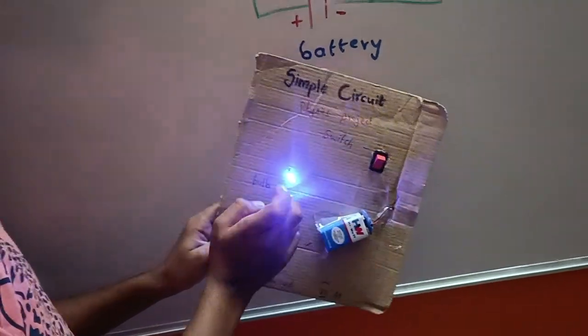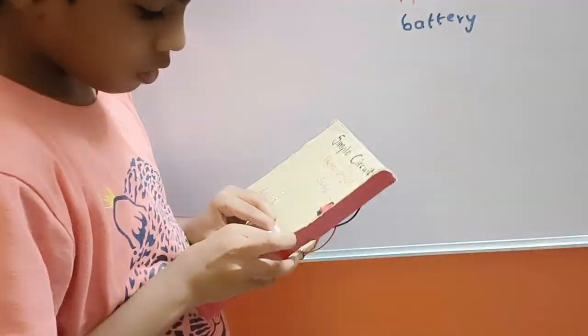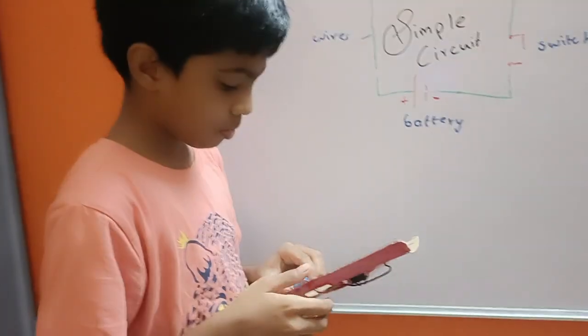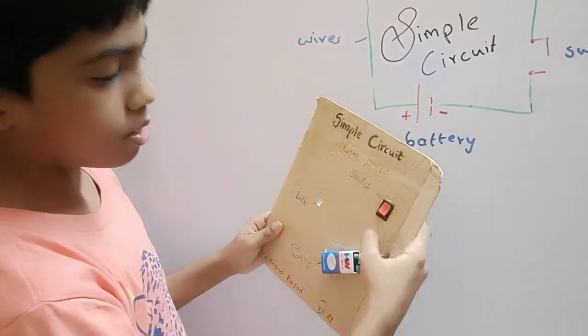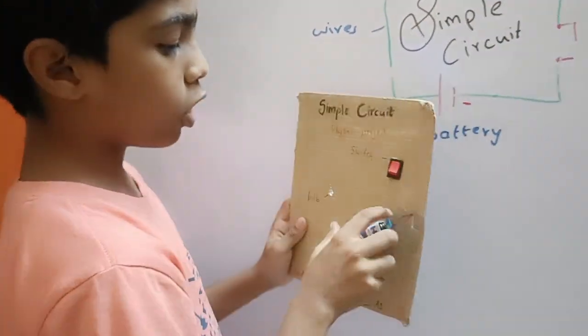Now when I turn it on the bulb is glowing. And if the wire is cut somewhere then even if we turn on the switch the bulb won't glow.